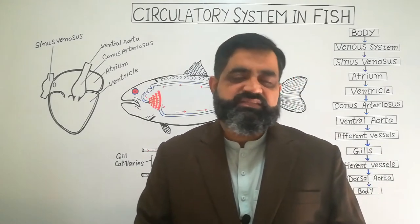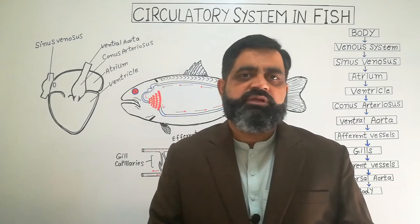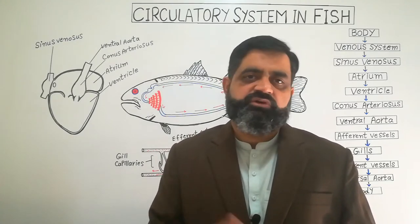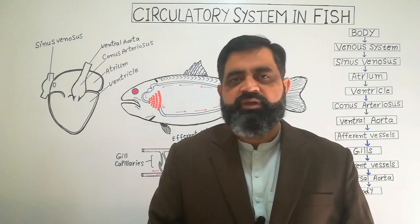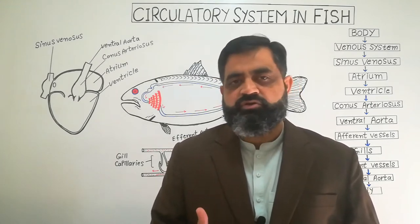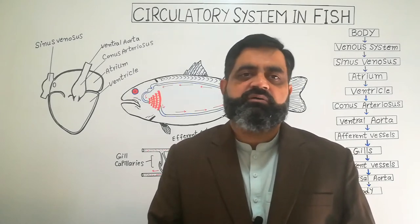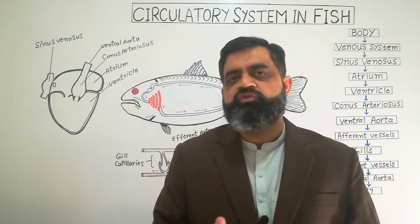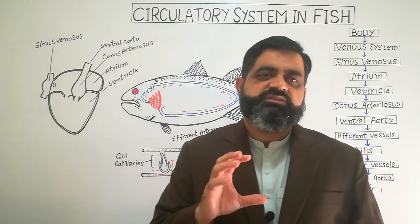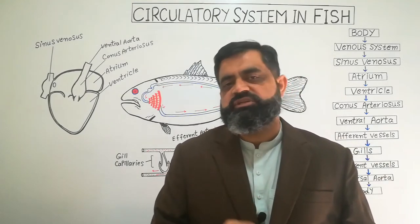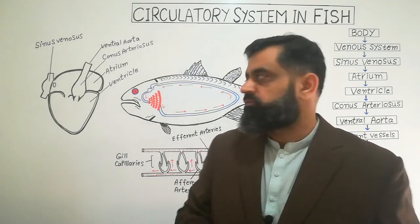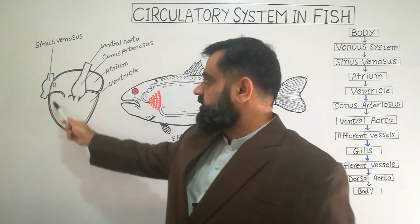The fish heart is a single circuit heart, meaning blood enters the heart only once and leaves the heart only once. In contrast, humans, mammals, birds, and reptiles have a double circuit heart where blood enters and leaves the heart two times. We will discuss that in later lectures.